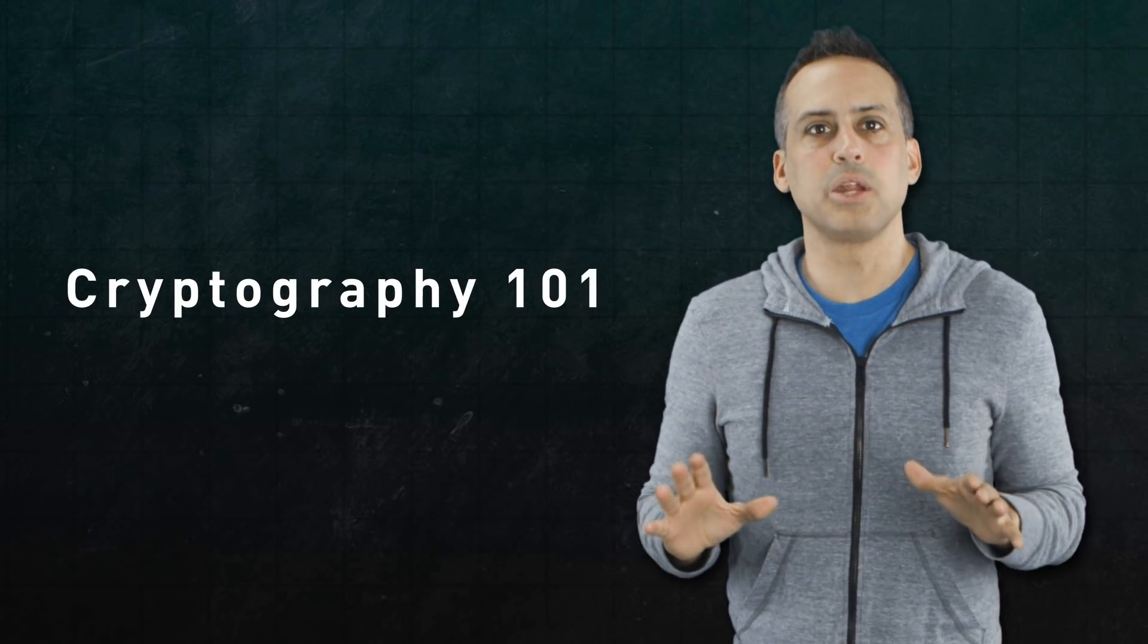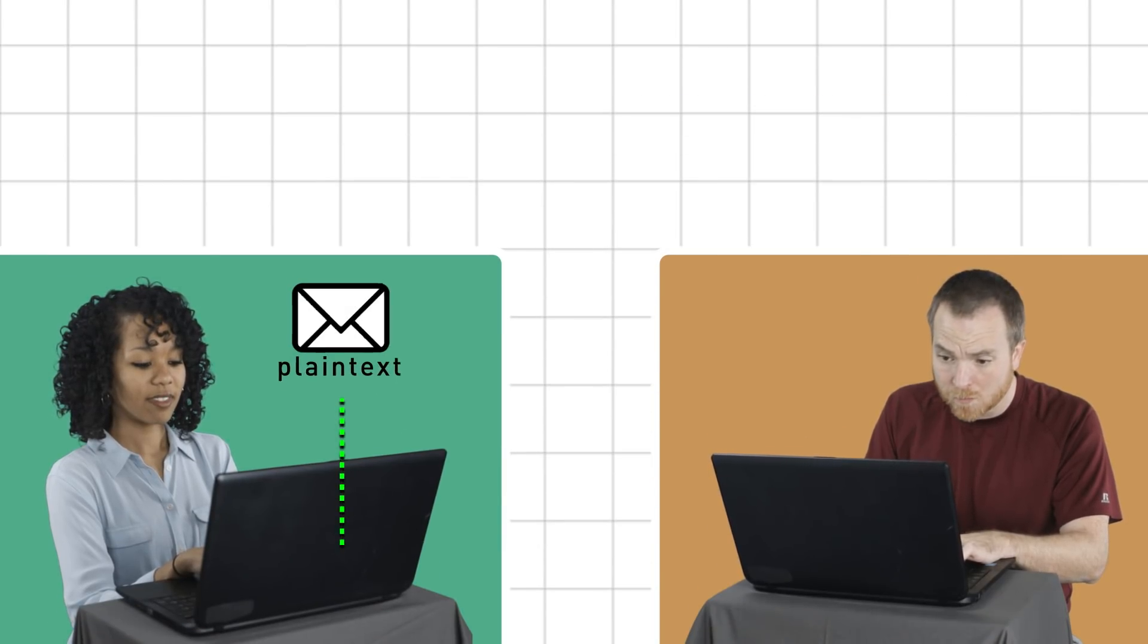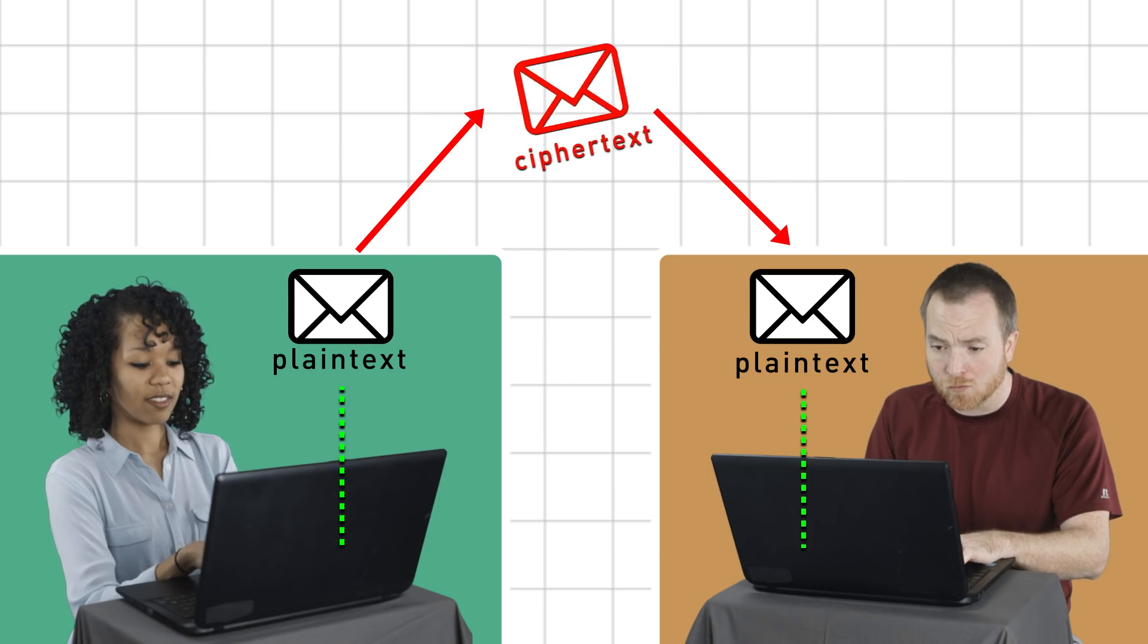To send encrypted communications, Alice and Bob could concoct some private scheme for converting plain text to and from ciphertext. But how would they know that scheme is actually secure? I mean, designing cryptosystems is hard, and quantifying their resistance to attacks is even harder. A clever eavesdropper might well expose a flaw in the system that Alice and Bob never anticipated.